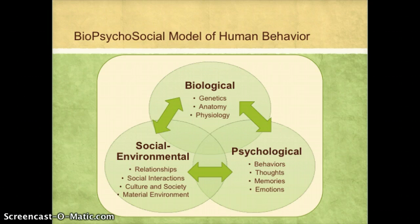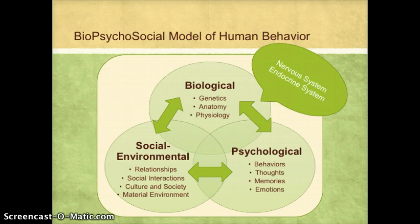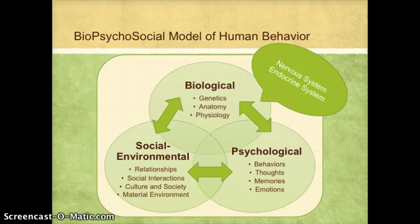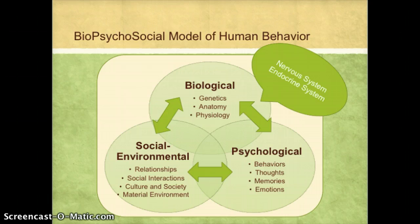These include genetics, anatomy, and physiology. In particular, we will be focusing on the nervous system and the endocrine system. Recent research in psychology also shows that the immune system and the digestive system can also influence behavior, but this relationship is not well understood at this point.